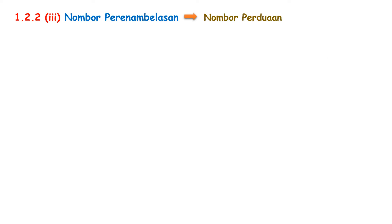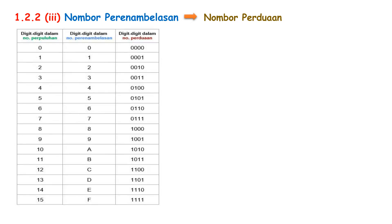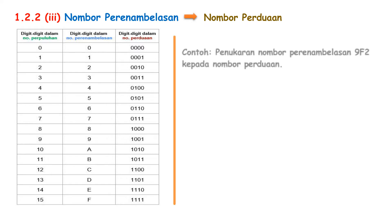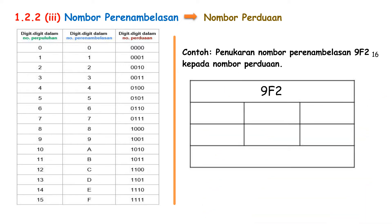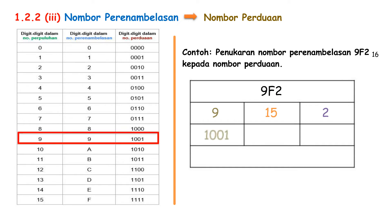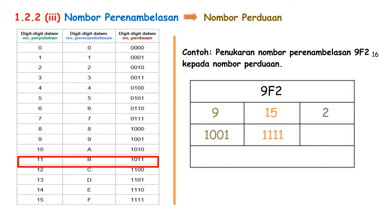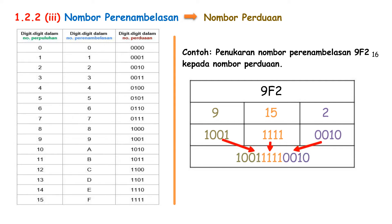Next, we go to conversion of Nombor Perenamblasan to Nombor Perduaan. Look at the table below. The table represents every Nombor Perenamblasan with 4 digit Nombor Perduaan. We will learn the conversion through an example. Convert Nombor Perenamblasan 9F2 to Nombor Perduaan. Write down Nombor Perenamblasan 9F2. Split every digit into one column. After that, refer the table. Nombor Perenamblasan 9F2 is equal to Nombor Perduaan 1001 1111 0010.